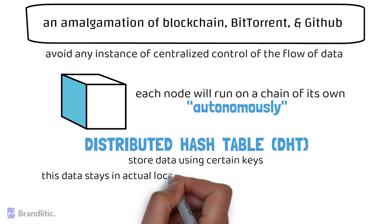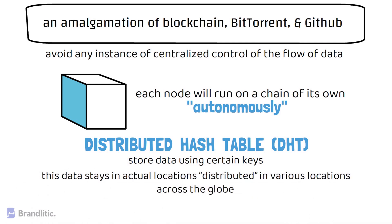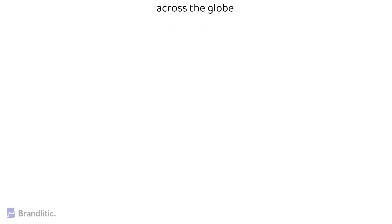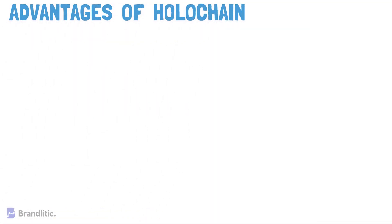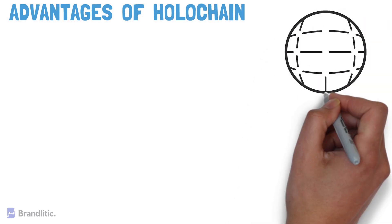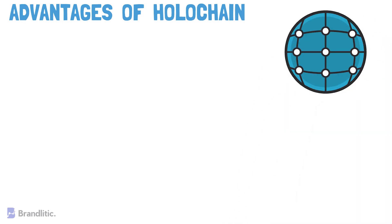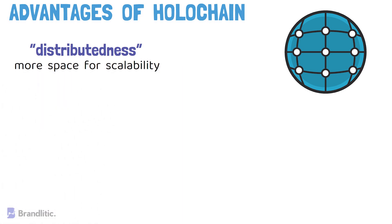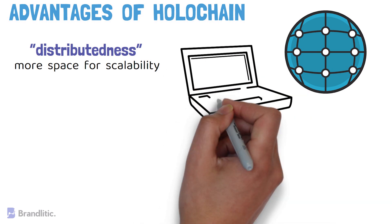This autonomy is made possible through what the holochain team calls a distributed hash table, or DHT, in which users can store data using certain keys, with that data stored in actual locations distributed across the globe. The interesting part about this data structure is that the network does not experience the burden of congestion common in traditional blockchain, and this distributedness relieves the network, giving it more space for scalability.